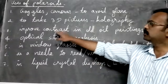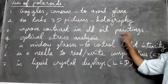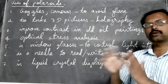Third one, to improve contrast in old oil paintings. In old oil paintings to improve the contrast - it means to show the difference between darkness and brightness - we use polaroid cells.